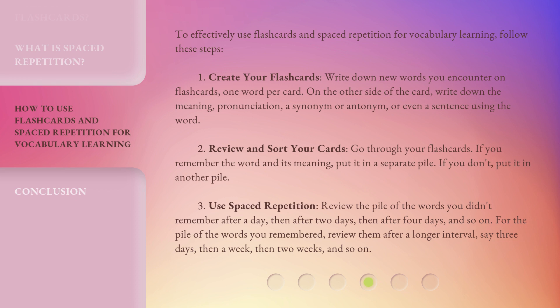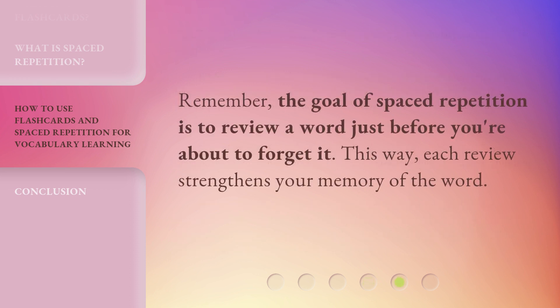Step 3: Use spaced repetition. Review the pile of words you didn't remember after a day, then after two days, then after four days, and so on. For the pile of words you remembered, review them after a longer interval — say three days, then a week, then two weeks, and so on. Remember, the goal of spaced repetition is to review a word just before you're about to forget it. This way, each review strengthens your memory of the word.